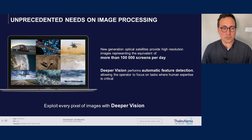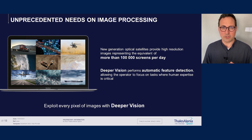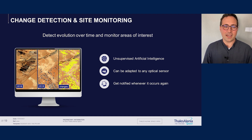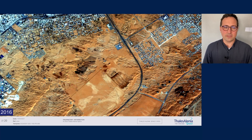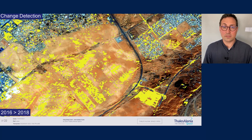The latest generation of Earth observation satellites collect enough images each day to fill more than 100,000 computer screens. Deeper Vision performs automated content extraction from images and enriches image data so the user can request images from given content and focus on tasks where human expertise is really critical. The application we will see today is called Change Detection and Site Monitoring. Every time a new image arrives on a given area, Deeper Vision will compare it with the latest previously acquired image and highlight places that changed significantly. For instance, on this region of the Middle East, we have two images taken by European Space Agency satellite Sentinel-2, one from 2016 and one from 2018 — we can see that volumes of earth have been removed in parts of the desert, some new buildings appeared, and there are also new roads.